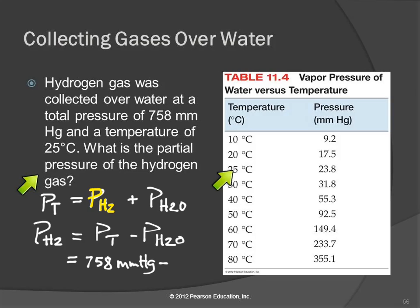Here's the temperature, 23.8, right? So we're going to subtract 23.8 millimeters of mercury. So the pressure of the hydrogen, then, is 734 millimeters of mercury.